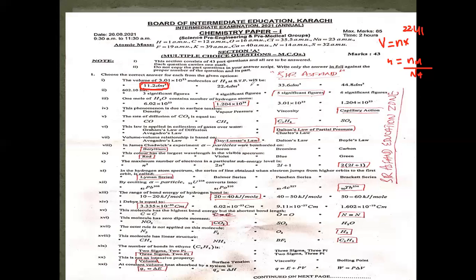6.02 × 10 contains five significant figures. One mole of water contains a certain number of hydrogen atoms. One mole of water has two hydrogen atoms per molecule, so total molecules are 6.02 × 10²³, and hydrogen atoms are 2 × 6.02 × 10²³ = 1.204 × 10²⁴.